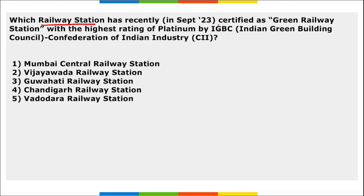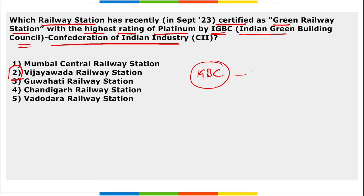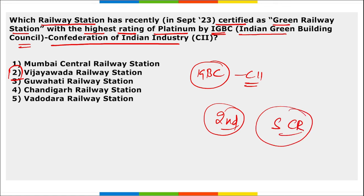Which railway station has recently been certified as the green railway station with the highest rating of platinum by IGBC, that is Indian Green Building Council, Confederation of Indian Industry? It is Vijayawada railway station. The rating was presented under IGBC's CII. This becomes the second railway station under the South Central Railway Zone to receive this platinum rating, after Secunderabad railway station in Telangana. This green railway station certificate is valid for the next three years.